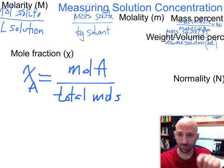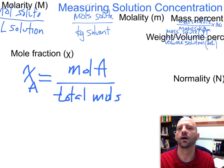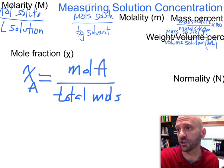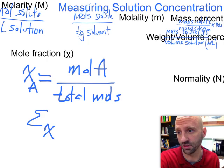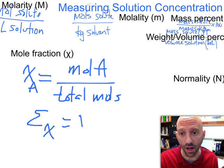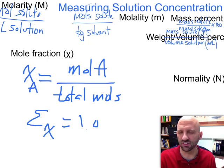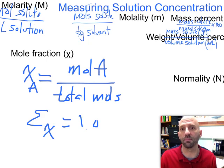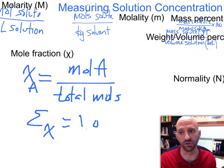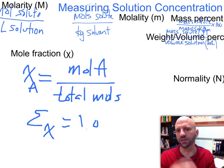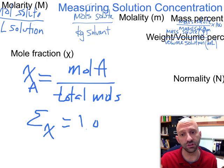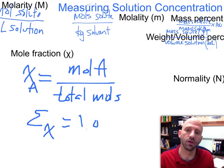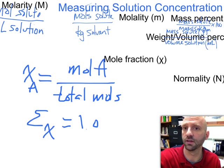You'll notice here since I've got moles on the numerator and moles in the denominator, the units would cancel out. This would be a unitless number, and it's also reported as the decimal, so mole fractions are always going to be point something. The sum of all the individual mole fractions, they're going to have to add up to one. Mole fraction is going to have a particular application for a particular property we're going to discuss later.